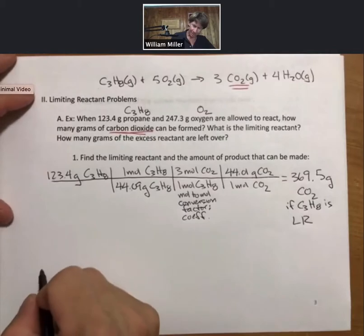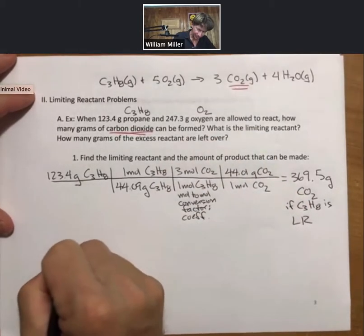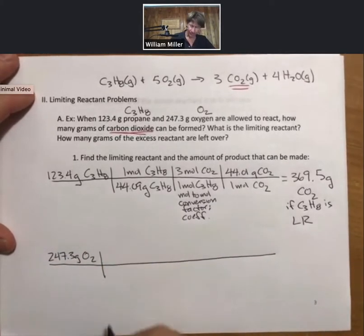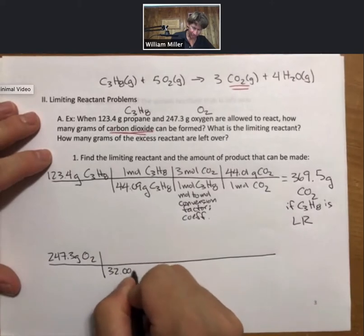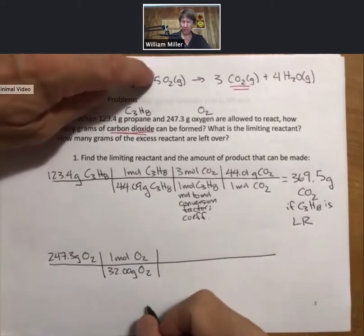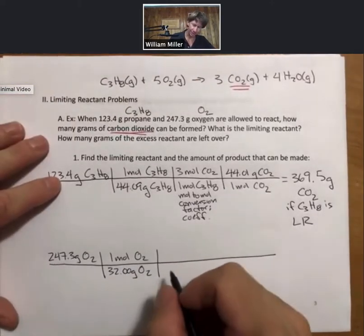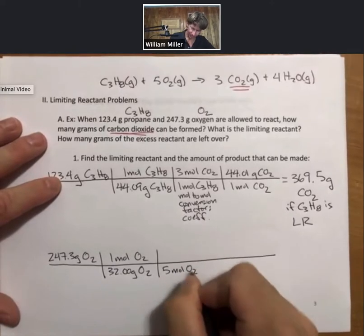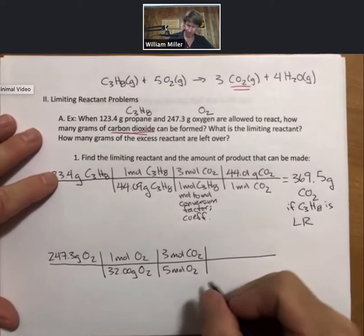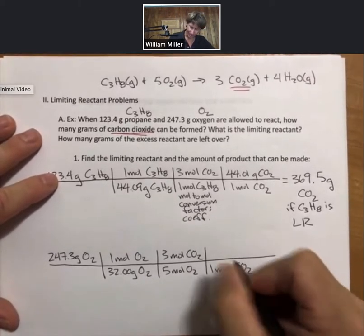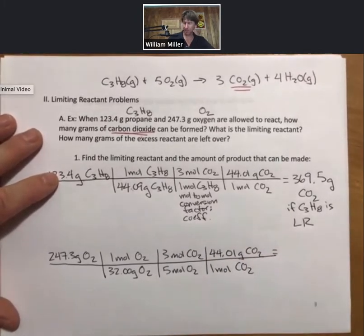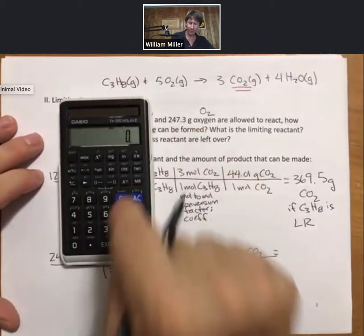Now we'll do the same thing again for oxygen. And oxygen, 32.00 grams per mole, takes five moles of oxygen reacted to make or produce three moles of carbon dioxide. And my last step is always the same for this part. Lots of ways to do limiting reactant problems. This is mine. Make sure you find yours.